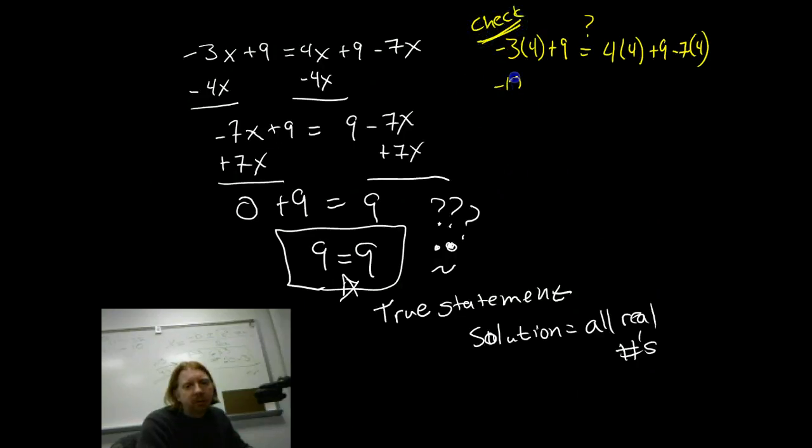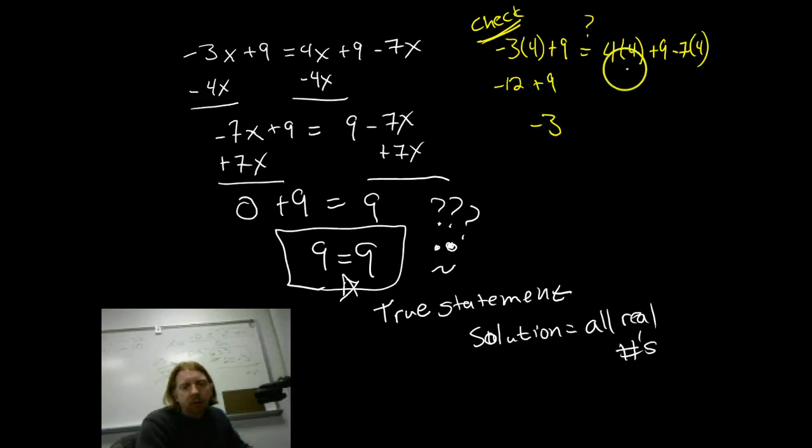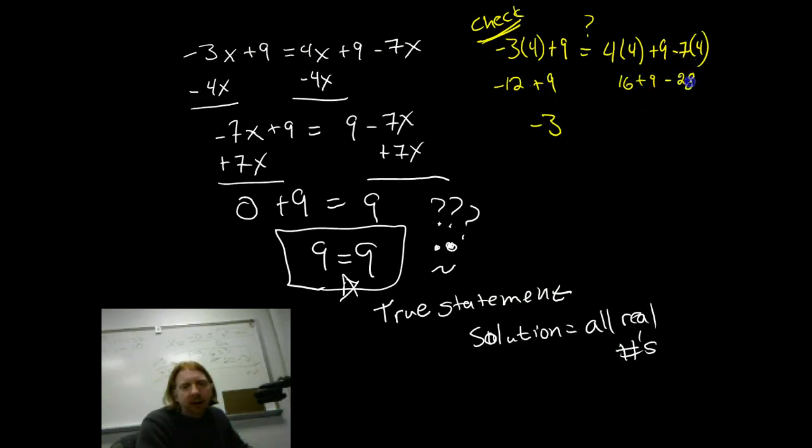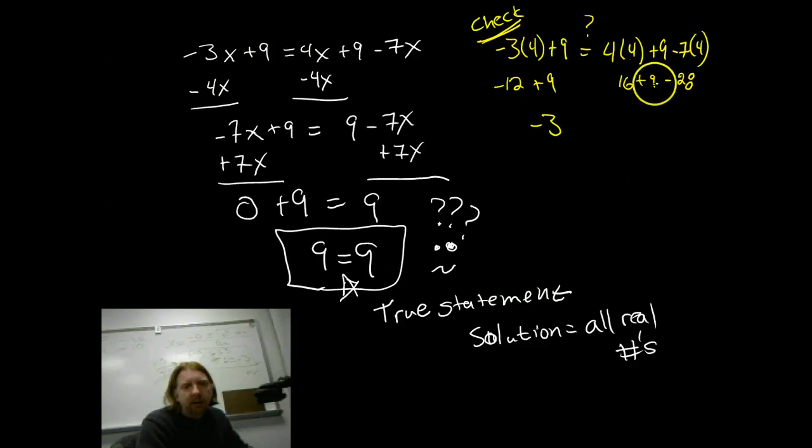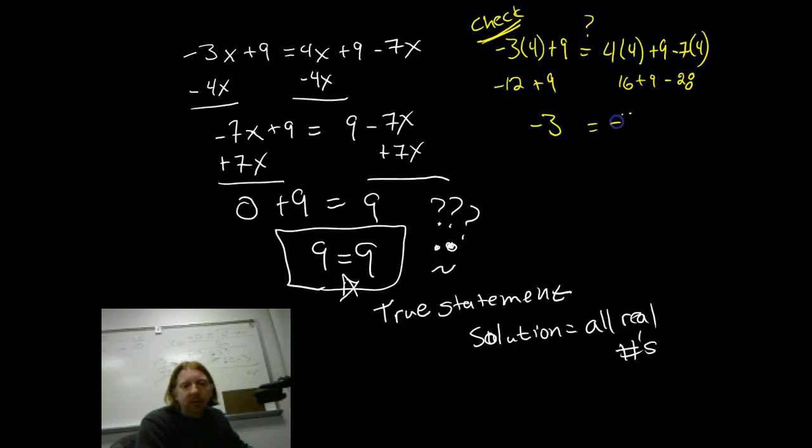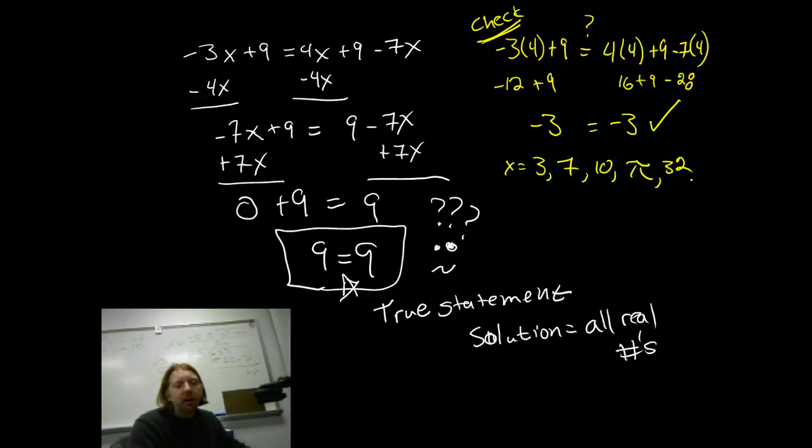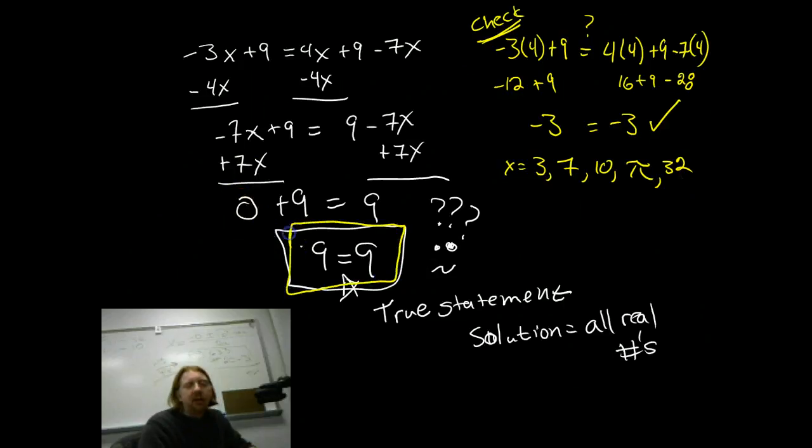So, this gives me negative 12 plus 9, which is a negative 3. Over here, I've got 16 plus 9 minus 28. That's going to give me a 25 minus 28 is negative 3. Checks out. And I can check that for x equals 3, 7, 10, pi, 32, any number I try. Because when I solved the equation originally, I got a true statement.